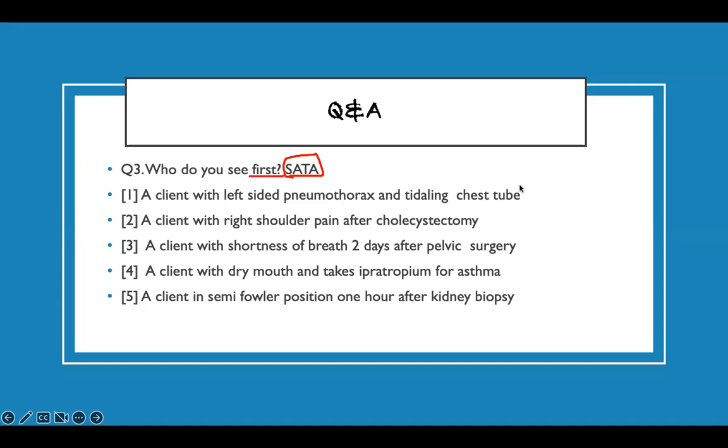See, first the same thing: we read it, assess it, and see if it makes sense. We have to be sharp about it. A client with left-sided pneumothorax, okay you have pneumothorax, fine, titling chest tube.